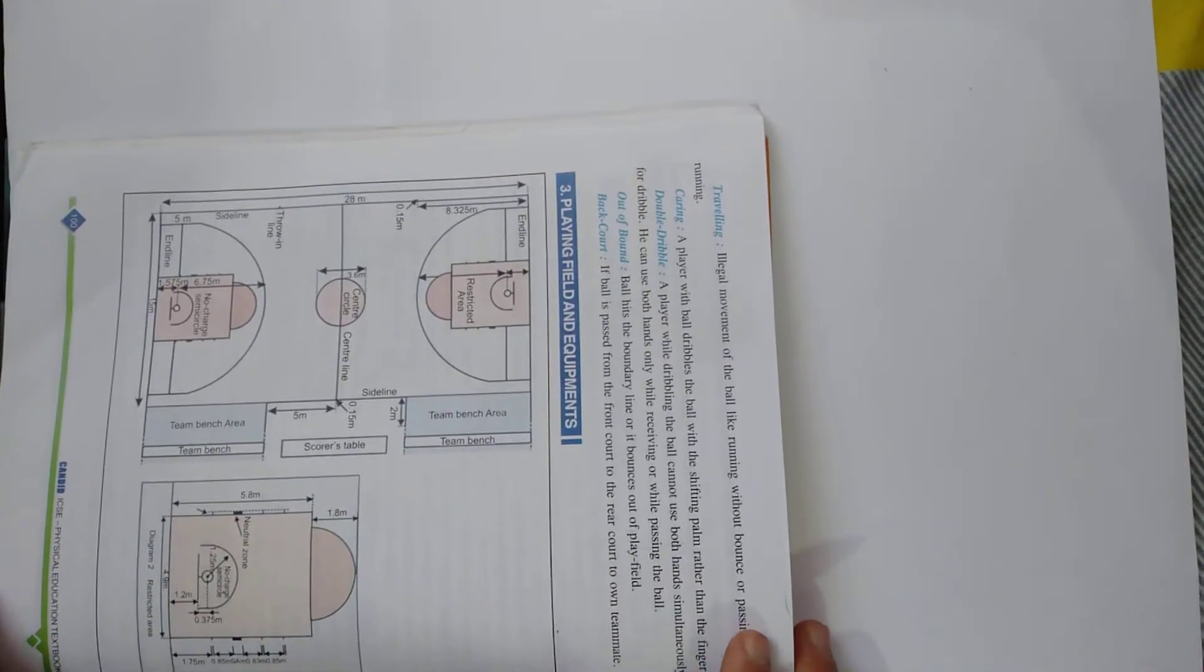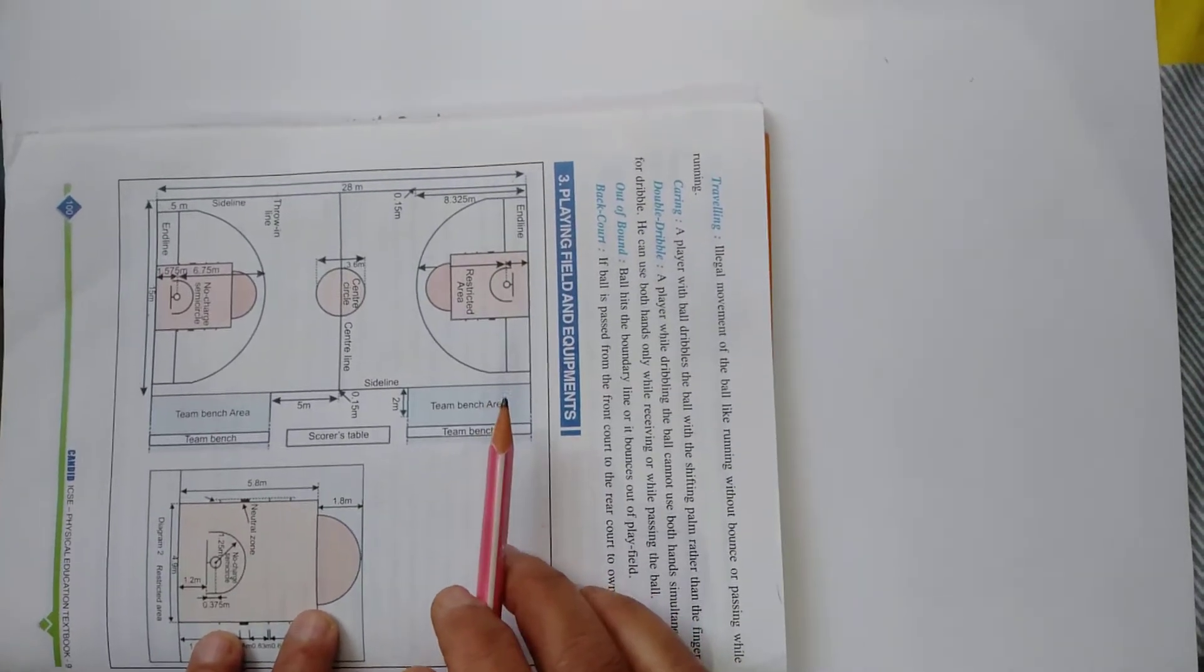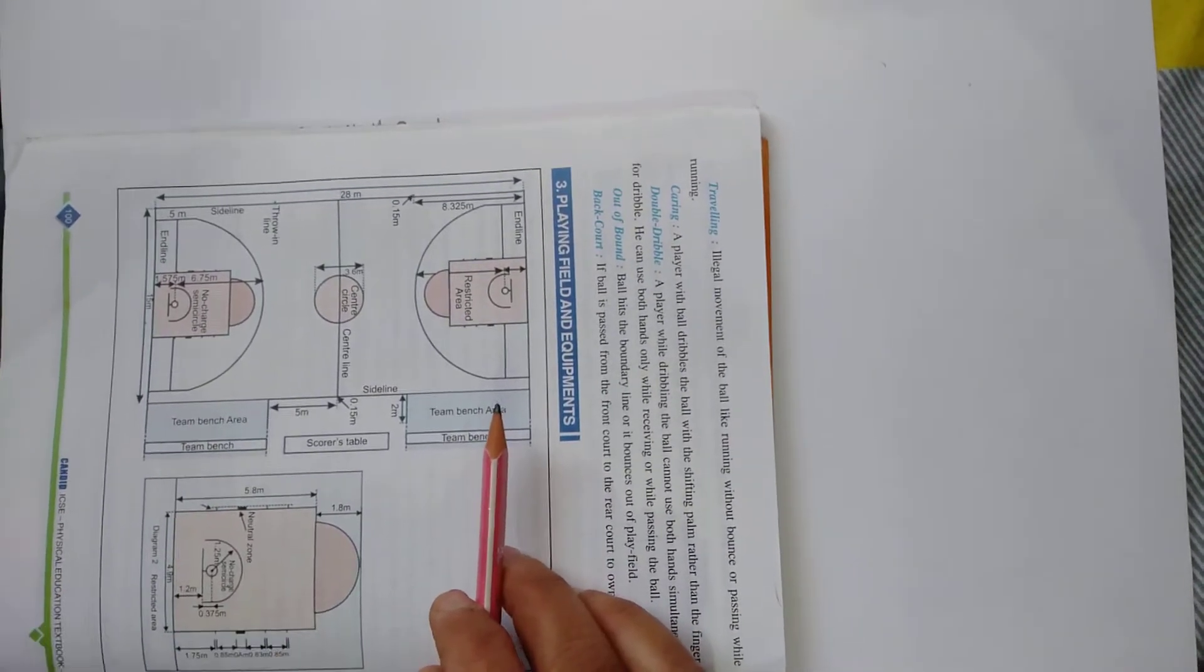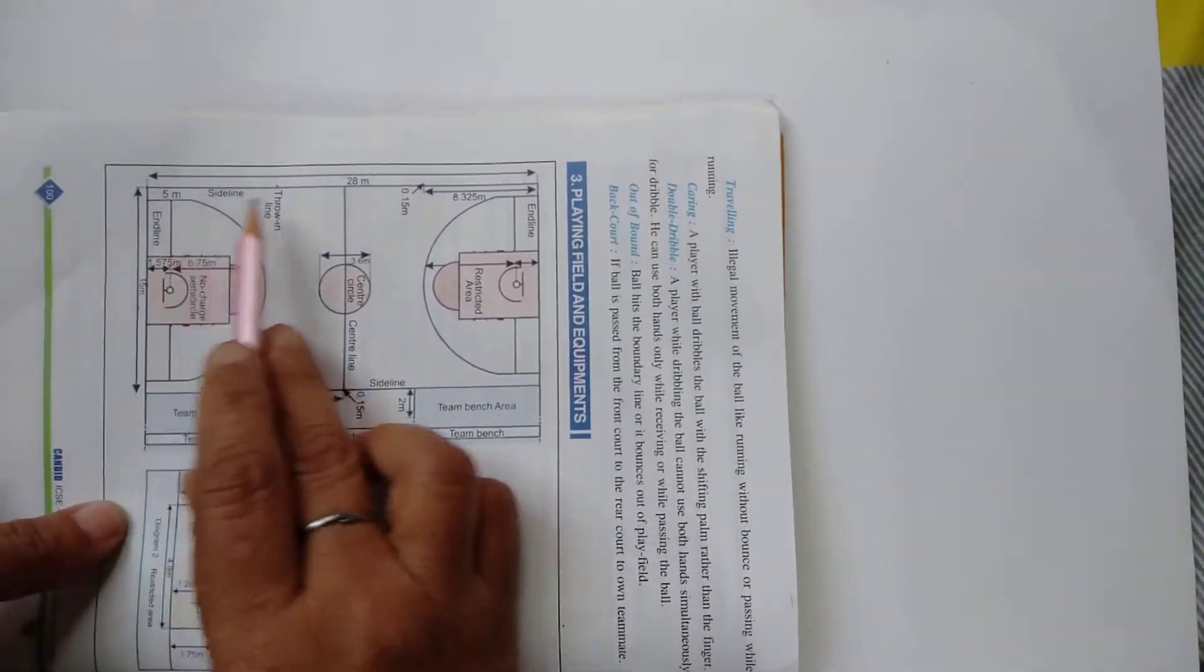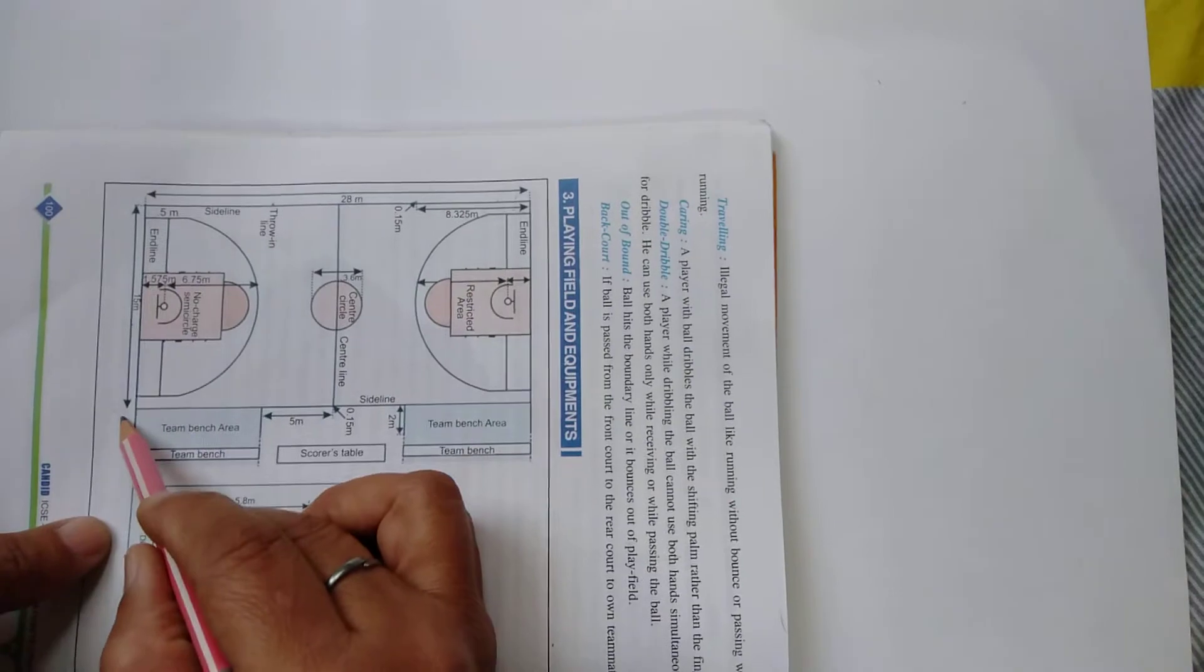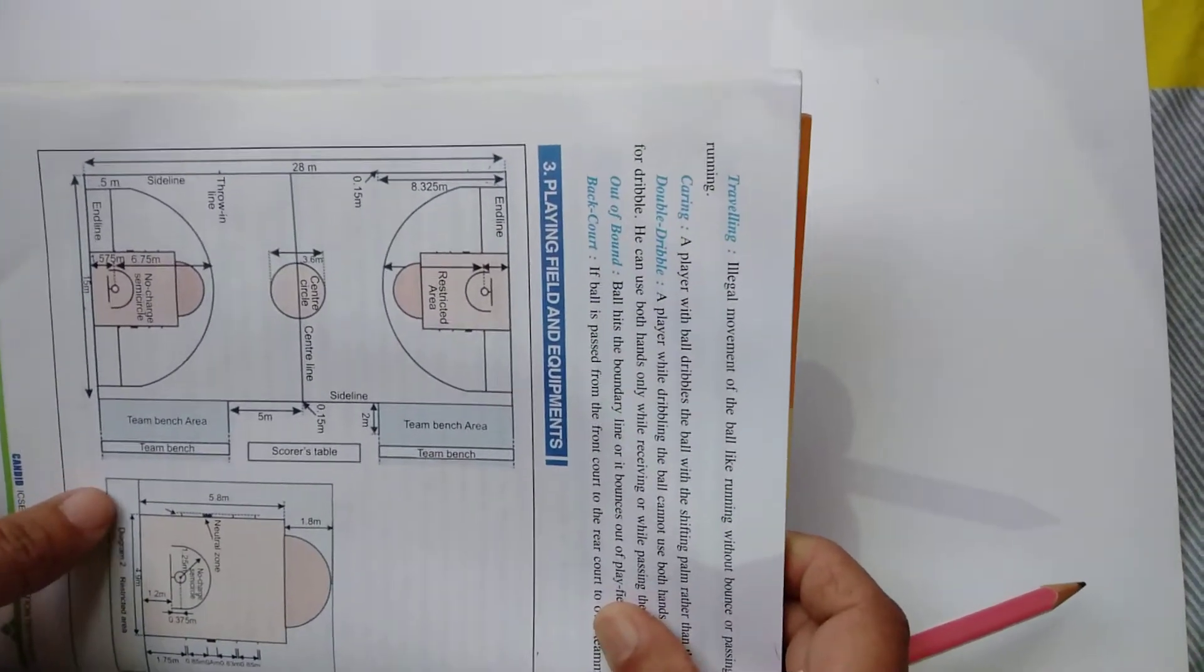Hello students, today I am going to explain about the basketball court. So let's get started. This is the basketball court. The court length is 28 meters, breadth 15 meters. But when we make it on sheet, we need the help of a scale when we cannot measure in meters.